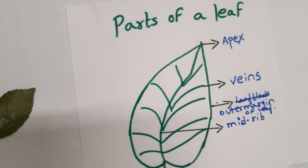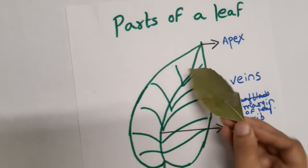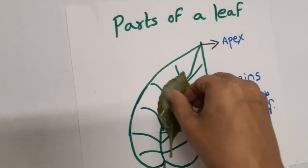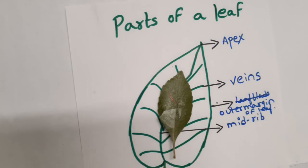In parts of the leaf, they have to see the leaf and tell what is here, like what is this edge known as, what is the middle one known as, and what is the middle line called?